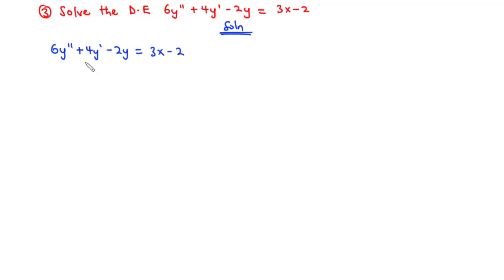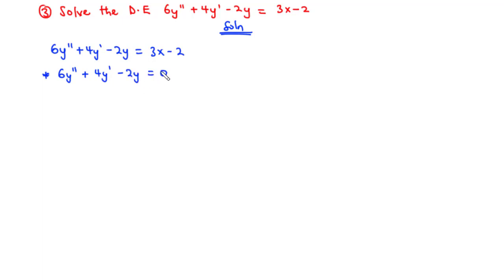First, we are going to treat this differential equation as a homogeneous differential equation by making the right-hand side go to 0. Therefore, we have 6y'' plus 4y' minus 2y equals 0. Now, let's try to find the general solution of this homogeneous differential equation by deriving the auxiliary equation.